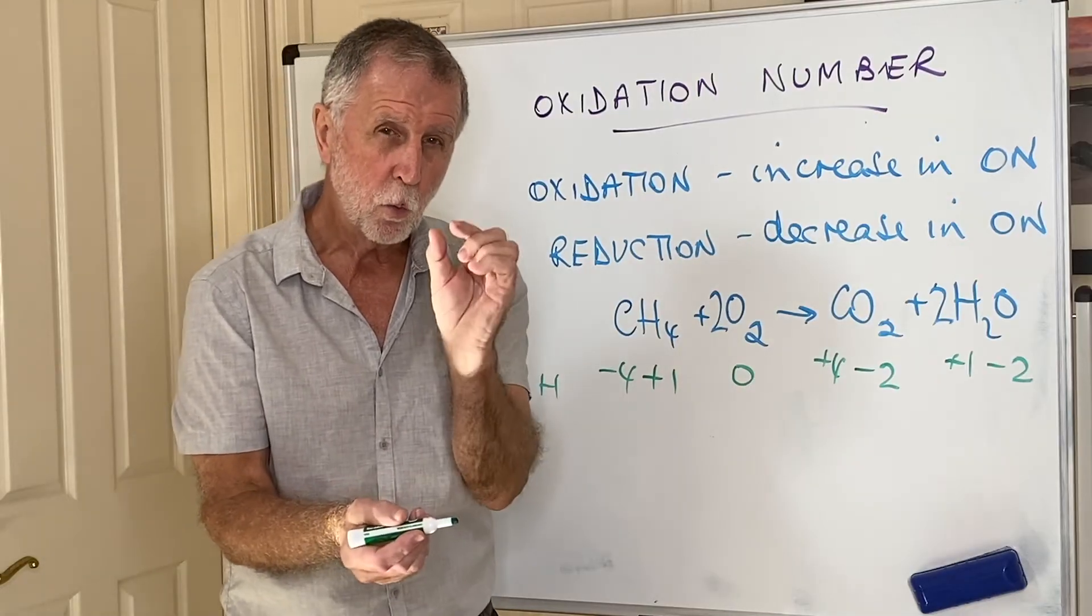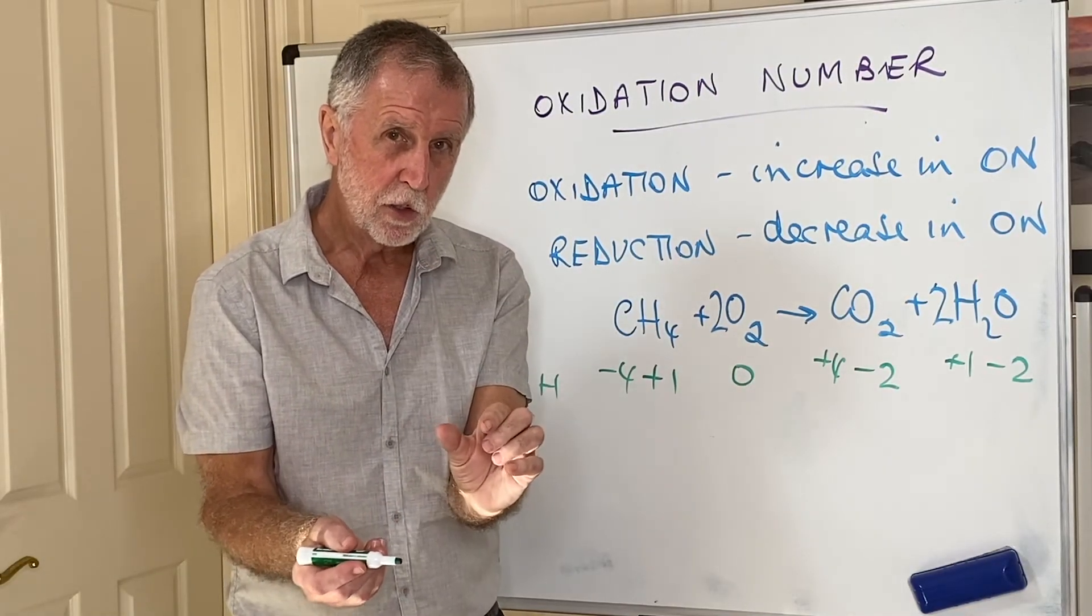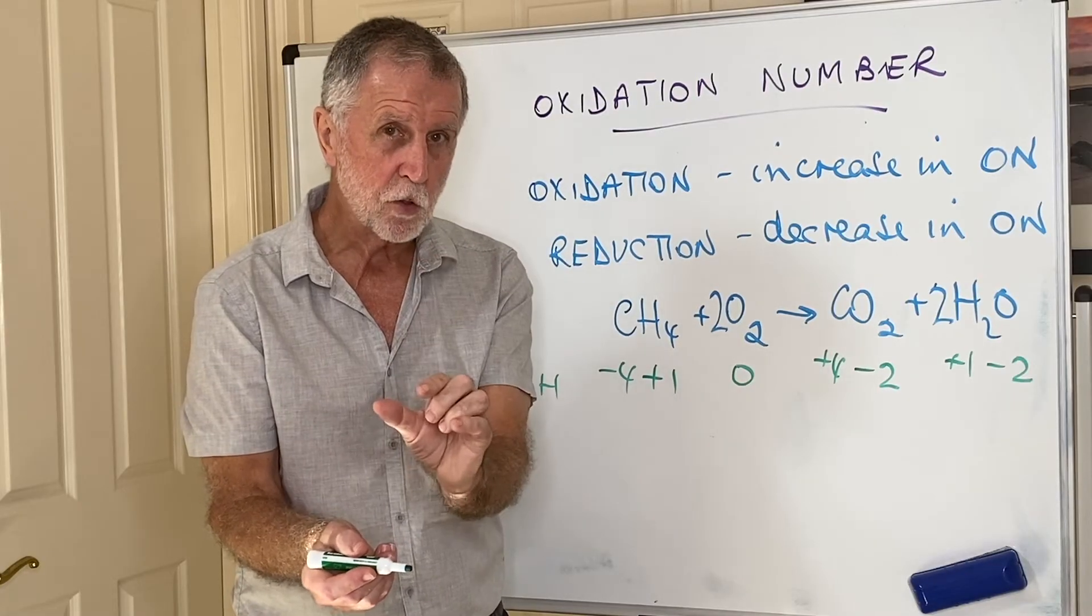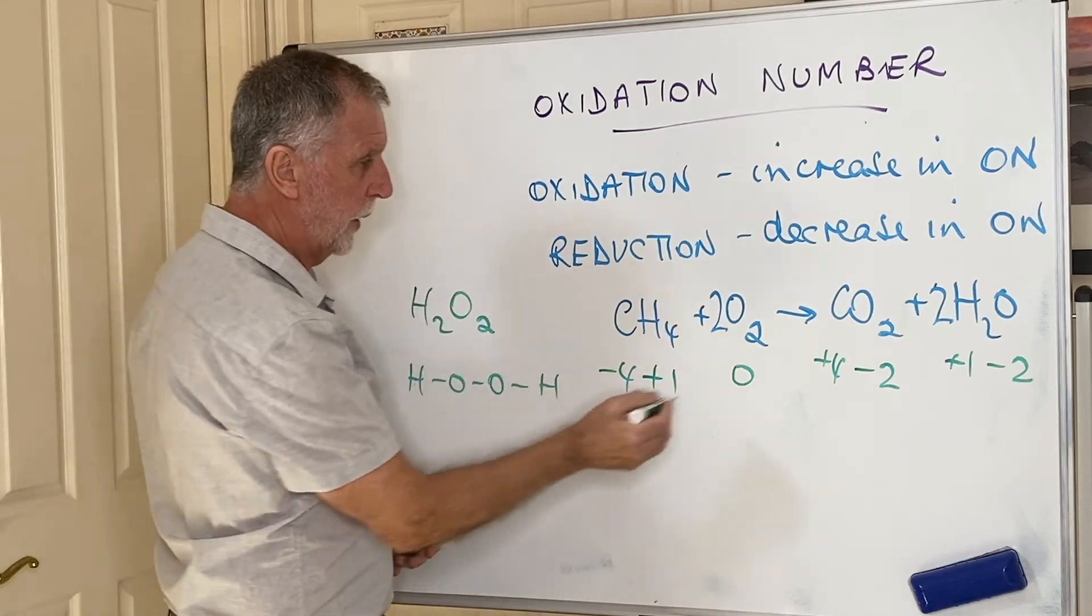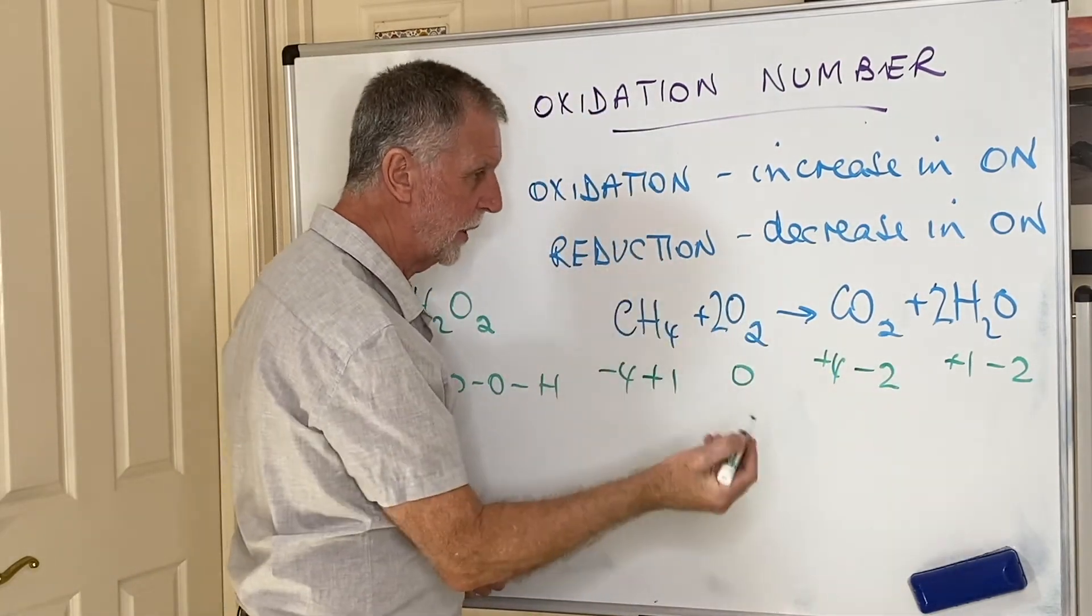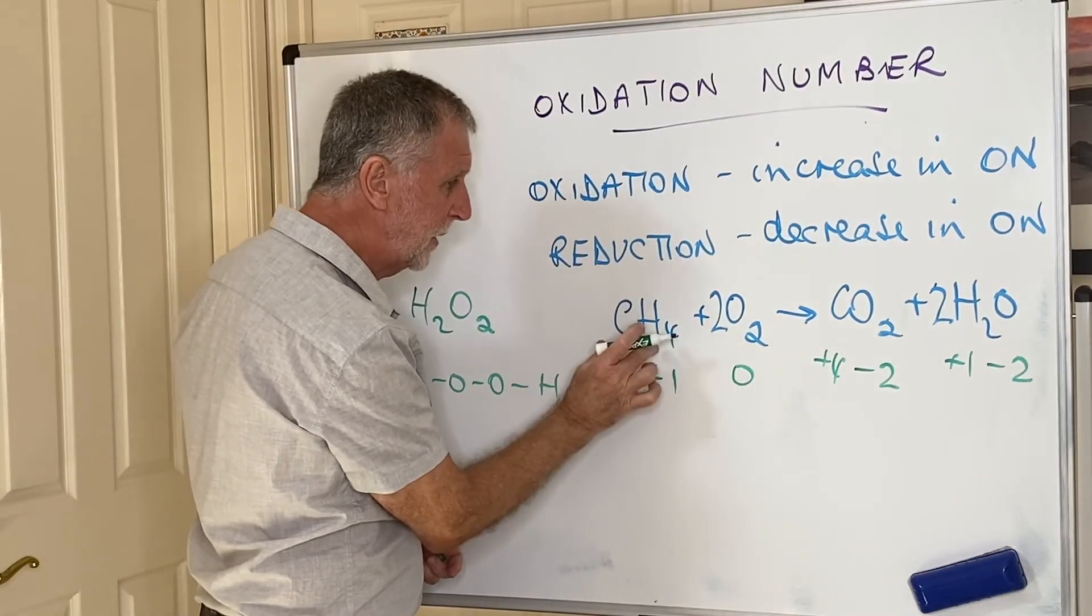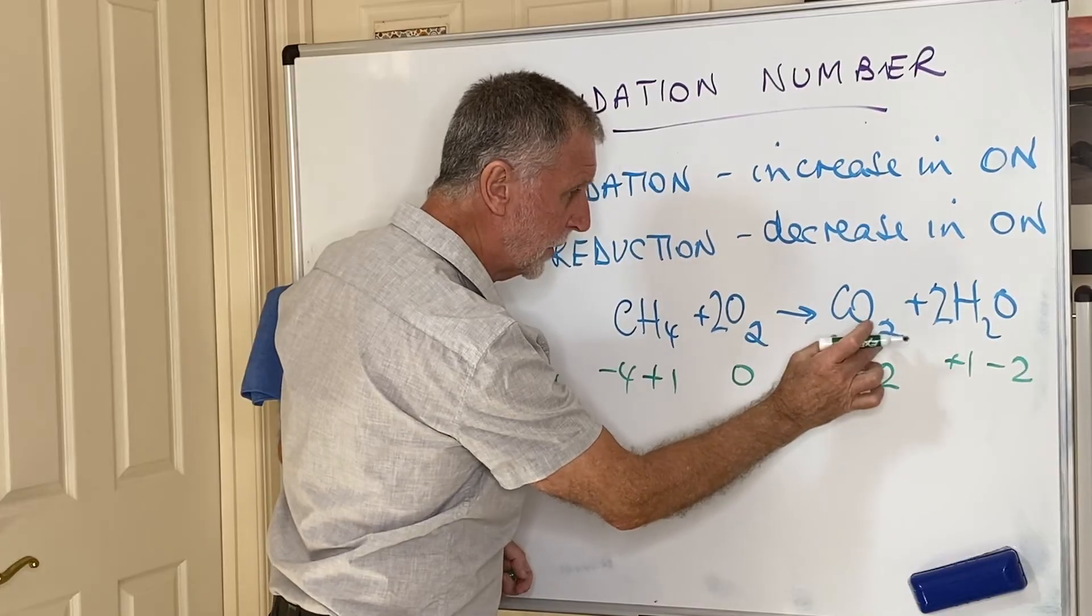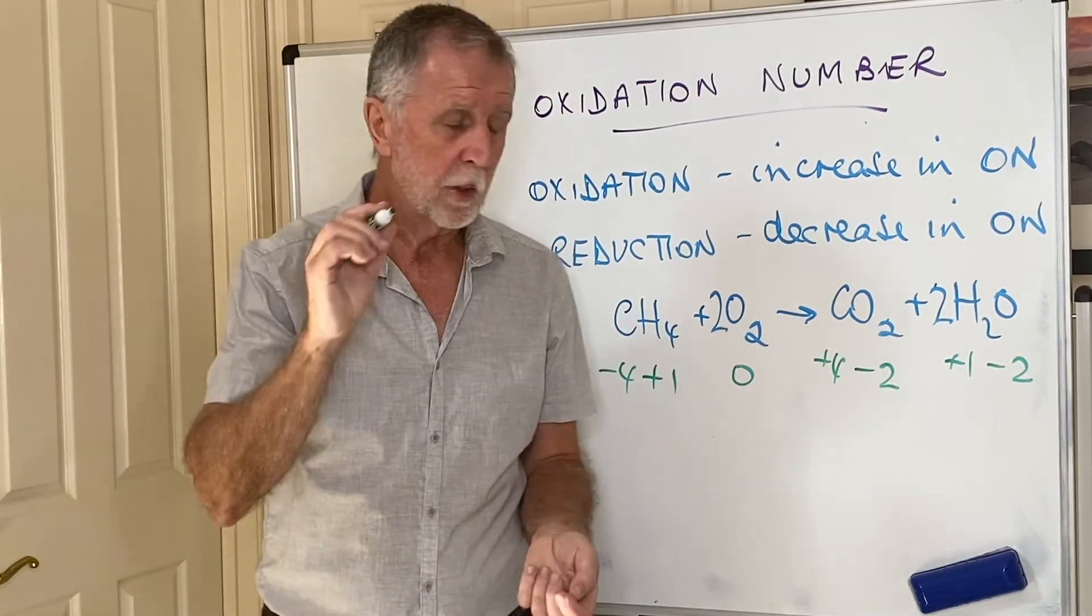So that means which of the two is the oxidizing agent and which is the reducing agent? Pause the video if you need to. Oxygen is being reduced. That makes it the oxidizing agent. The carbon in methane—you would say methane. The methane is being oxidized. That makes methane the reducing agent.